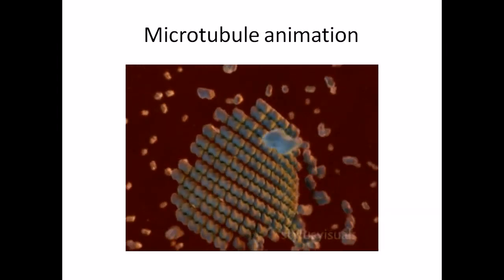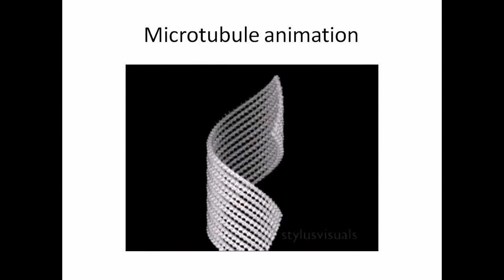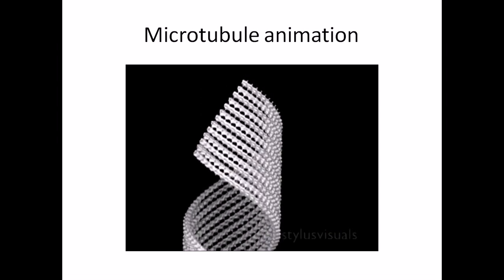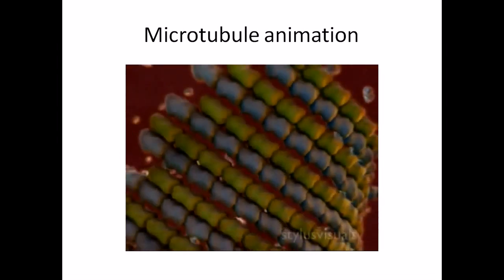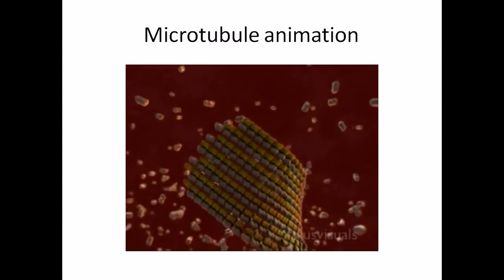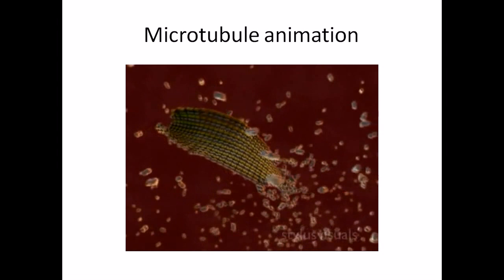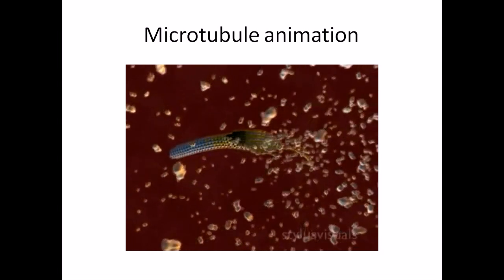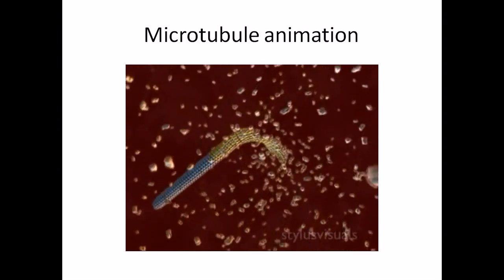The resulting assembly intermediate is an open sheet that is very short-lived, but it can be stabilized into helical ribbons amenable to structural studies by electron microscopy and image analysis. This polymer shows protofilaments arranging in pairs with alternating contacts. The arrangement is set to roll into a tube when it reaches the right width and length. The closing up of the microtubule is a highly cooperative zipping-up process.